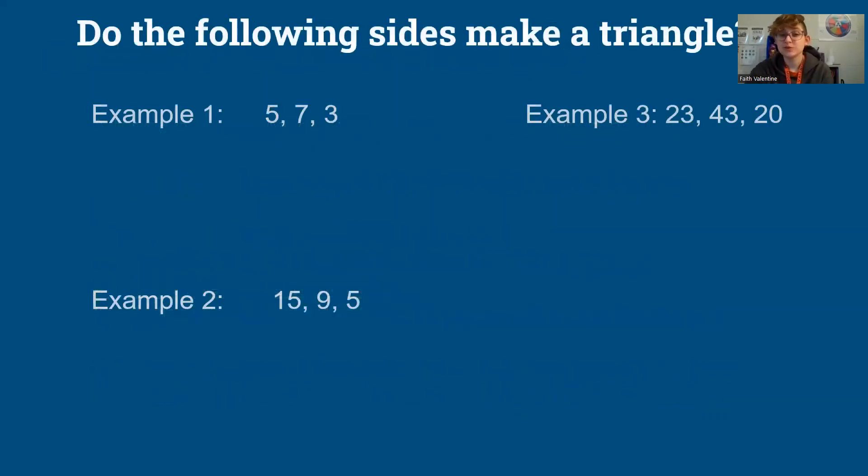So do the following sides make a triangle? Remember our first step was to put our numbers in order from least to greatest. Now this is not always necessary. You might easily be able to pick out what your smallest sides are. Now we're going to add them together. Three plus five is eight. Is eight greater than seven? Yes. So this is a triangle.